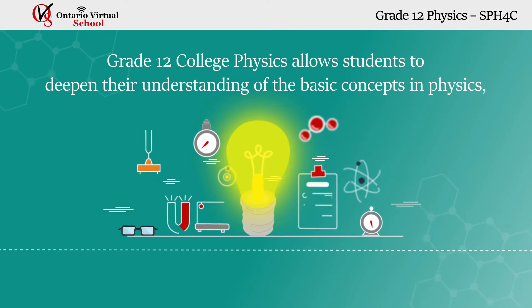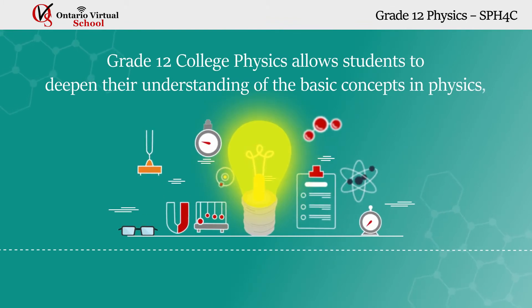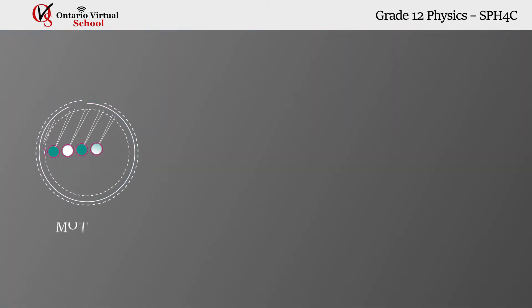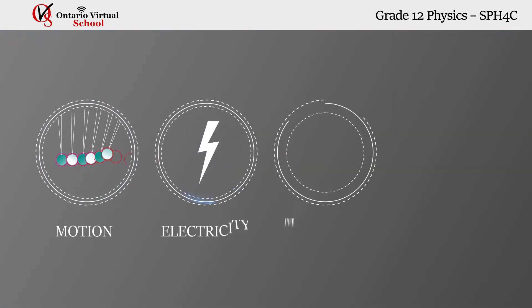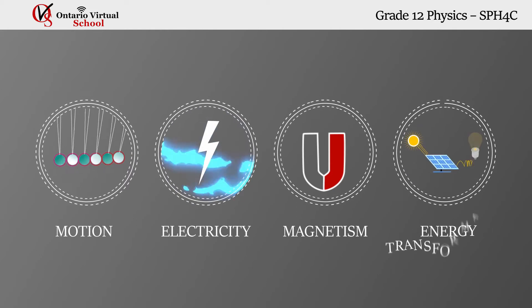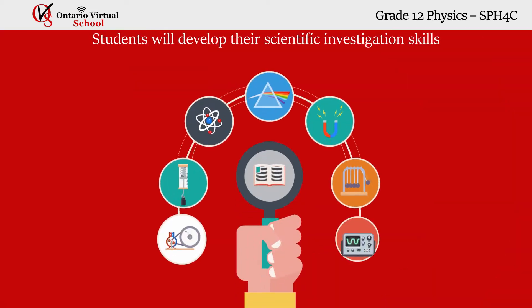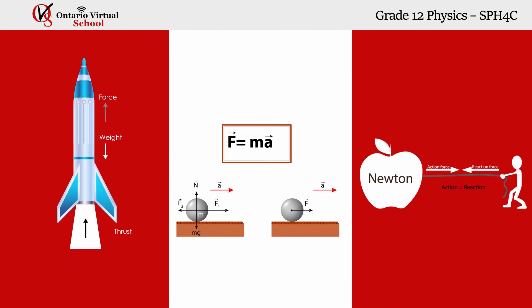Grade 12 college physics allows students to deepen their understanding of the basic concepts in physics, including motion, electricity, magnetism, and energy transformation. Throughout this course, students will develop their scientific investigation skills as they test laws of physics and solve both assigned and emergent problems stemming from hands-on investigations.